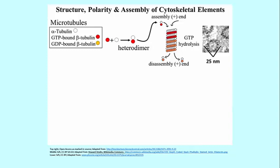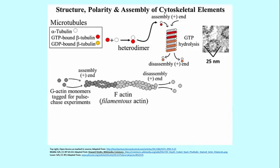Microfilaments are composed of actin monomers called G-actin, meaning globular actin — globular, as opposed to fibrous polypeptides. These monomers can be radioactively labeled for experiments. You can show there is an assembly end: monomers add at one end and come off at the other, much like microtubules. The actin filament is called F-actin — it is actually two intertwined polymers of G-actin, 7 nanometers in diameter, making it the narrowest structure in the cytoskeleton.